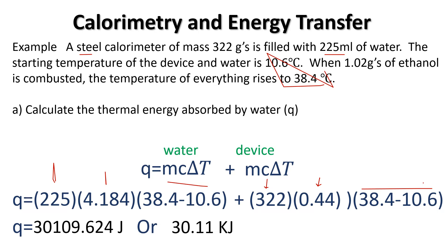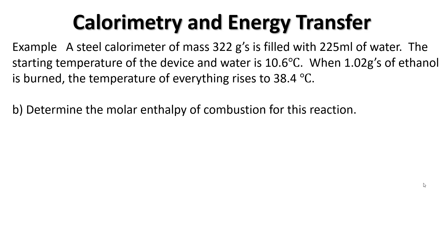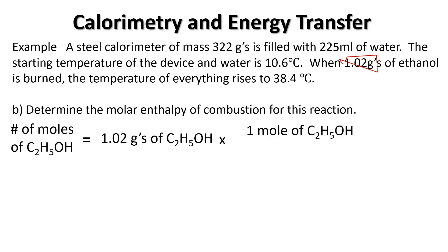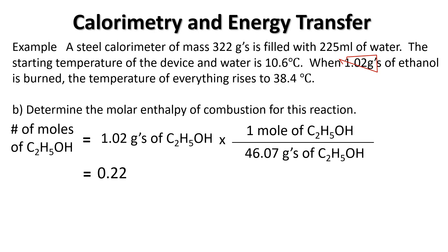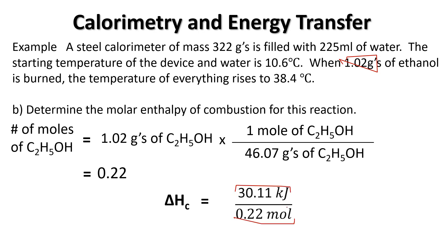Now we need to turn that into kilojoules per mole. We haven't used the 1.02 grams of ethanol yet. We take that value and multiply by one mole, which is approximately 46.07 grams per mole, and divide to get approximately 0.22 moles. Then we can figure out our delta H of combustion: the units are kilojoules per mole, so we divide our kilojoule answer by our mole answer — and you get approximately that many kilojoules per mole.